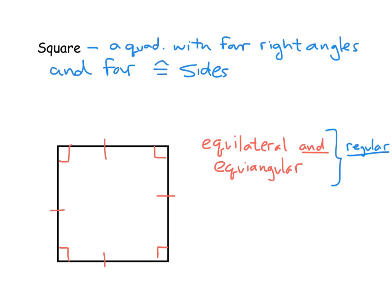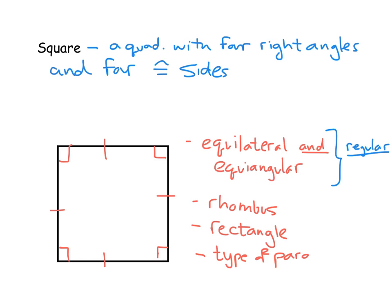A square is also considered to be a rhombus because it fits the definition of a rhombus — it has the four congruent sides, with the additional characteristic of four right angles that not every rhombus would have. Similarly, a square is also considered to be a rectangle because it fits that definition as well. And just like a rhombus and a rectangle, it's also a type of parallelogram. It's almost like if you combined the characteristics of a rhombus and a rectangle, that would make what a square is.